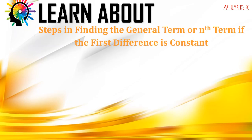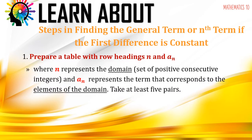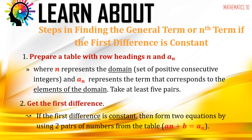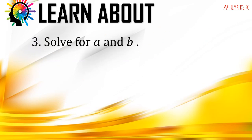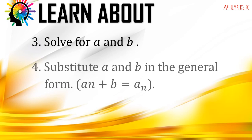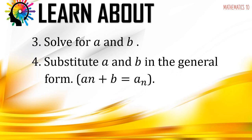These are the steps for finding the general term or nth term if the first difference is constant. First, prepare a table with row headings n and a sub n. Second, get the first difference. Third, solve for the values a and b. Next, substitute the values of a and b in the general form a·n plus b equals a sub n. And lastly, check.